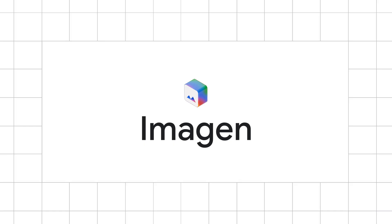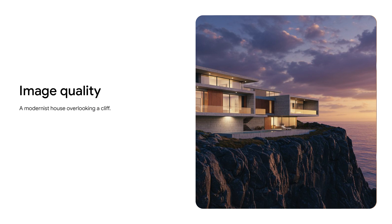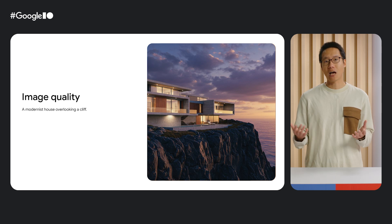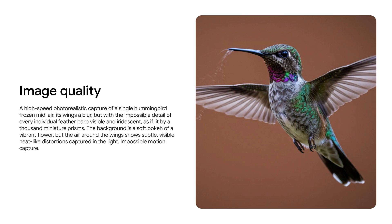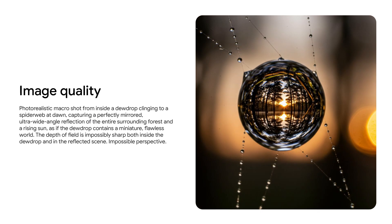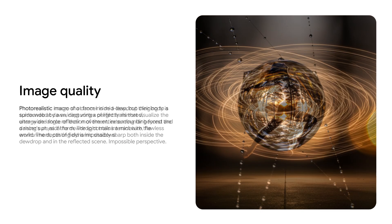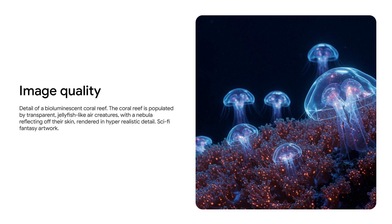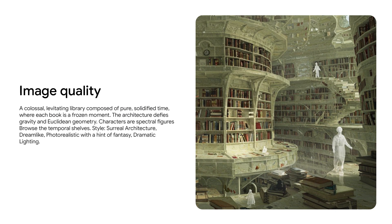We'll start with Imagen. The most basic use case is to generate high-quality images from a text prompt. It can generate many different kinds of images, like photorealistic images which would be very difficult and costly to capture in real life, such as this drone photo or this photo of a hummingbird. Imagen can also do macro photography, create realistic and artistic lighting conditions, science fiction images, or images of different art styles.